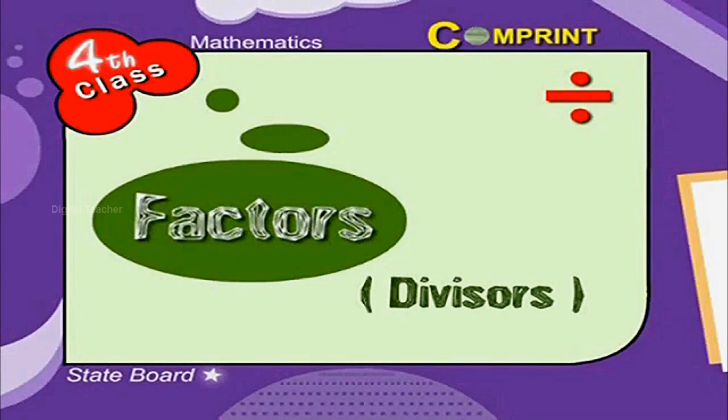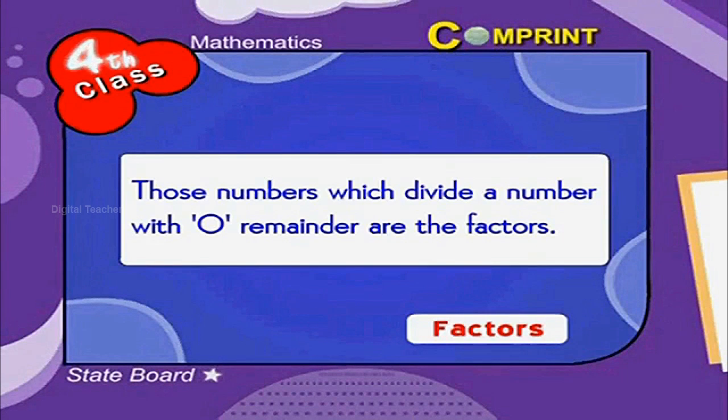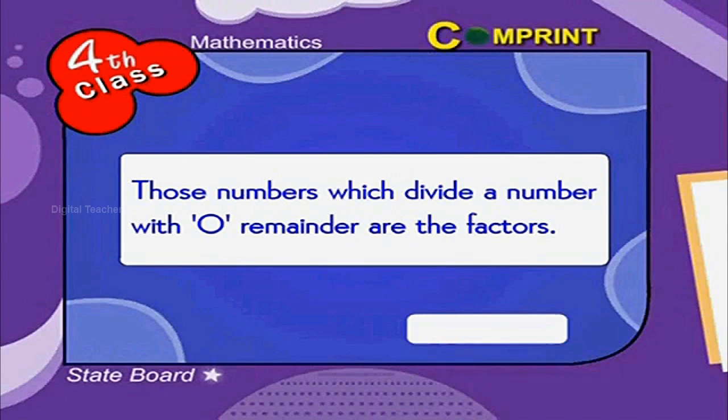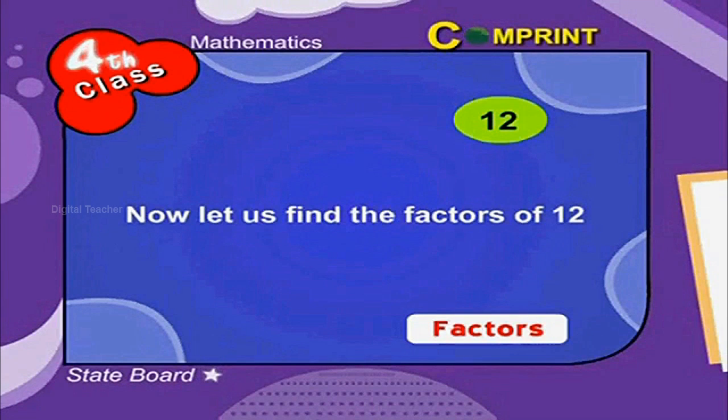Factors: Those numbers which divide a number with zero remainder are the factors of that number. For example, number 12. Now let us find the factors of 12.